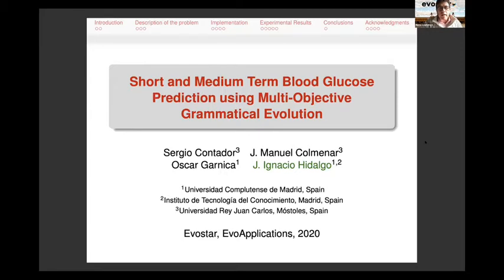I'm going to present the work titled Short and Medium-Term Glucose Prediction Using Multi-Objective Grammatical Evolution. It's part of the PhD thesis of Sergio Contador and was developed in collaboration with the University of Juan Carlos and the Universidad Complutense de Madrid, both in Spain.